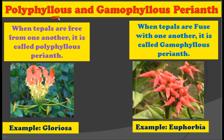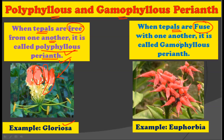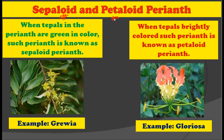Now let us see about polyphyllous and gamophyllous Perianth. When the tepals are free from one another, such a Perianth is called polyphyllous Perianth — the example is Gloriosa. When the tepals are fused with one another, it is called gamophyllous Perianth — the example is Euphorbia. You can see in the picture the tepals are fused with each other. So in a polyphyllous Perianth we have free tepals, and in a gamophyllous Perianth we have fused tepals.